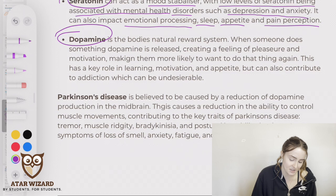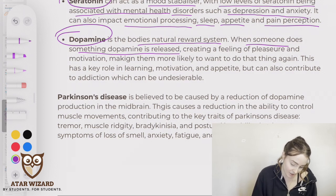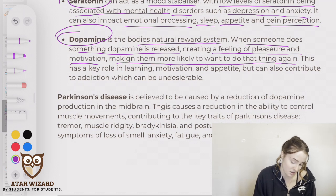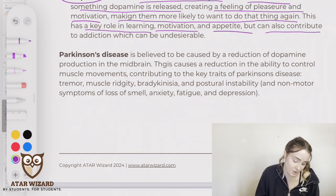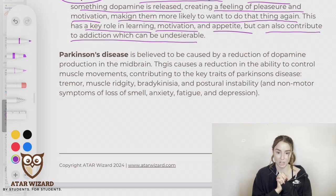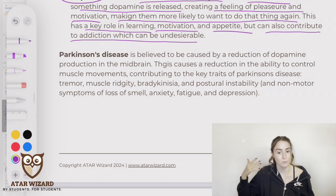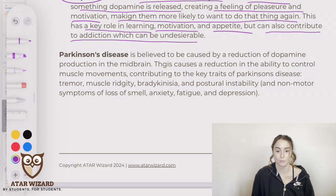Dopamine is the body's natural reward system. When someone does something rewarding, dopamine is released, creating a feeling of pleasure and motivation, making them more likely to want to do that thing again. This has a key role in learning, motivation, and appetite, but can also contribute to addiction. For example, someone with a gambling addiction — every time they win, dopamine is released, increasing their feeling of reward and likelihood of doing it again, which can lead to a gambling addiction.